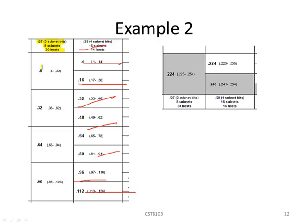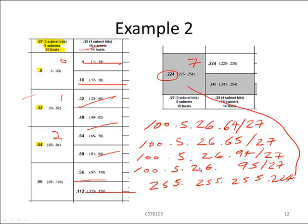We cross out everything and focus on our slash 27 recipe — we have borrowed three host bits and end up with eight subnets, each supporting 30 hosts. Counting subnet zero, subnet one, subnet number two: the subnet ID for subnet number 2 is 10.5.26.64/27. The first usable IP is 10.5.26.65, the last usable is 10.5.26.94, the broadcast is 10.5.26.95, and the subnet mask is 255.255.255.224.